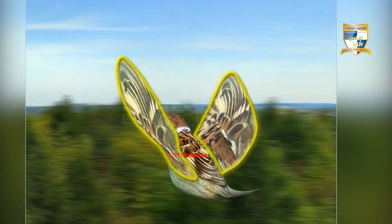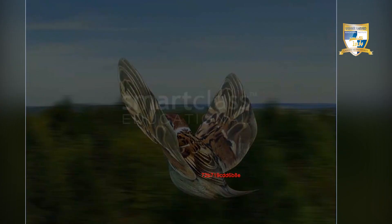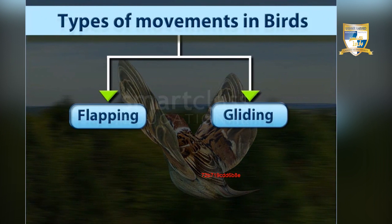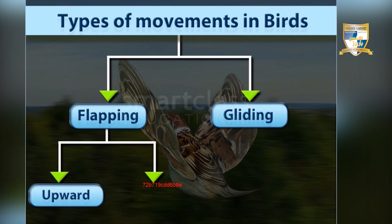Birds fly with the help of wings. For flying, they employ two methods: flapping and gliding. During flapping, they produce two different kinds of strokes — upward and downward.